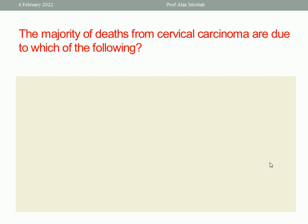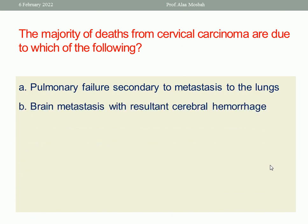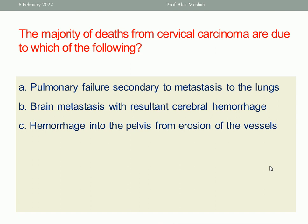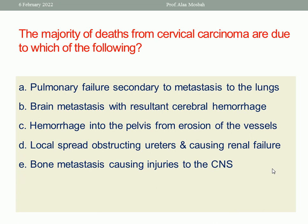The next question: the majority of deaths from cervical carcinoma are due to which of the following? Options: pulmonary failure secondary to metastasis to the lung, brain metastasis with cerebral hemorrhage, hemorrhage into the pelvis from erosion of vessels, local spread obstructing the ureter and causing renal failure, or bone metastasis causing injury to the central nervous system. The spread of cervical carcinoma through the cardinal ligament reaching the ureter, obstructing it and causing renal failure, is the most common cause of death. The right answer is D: local spread obstructing the ureter and causing renal failure.